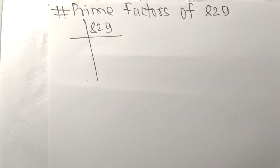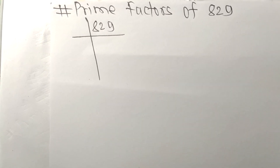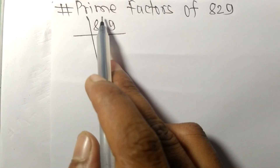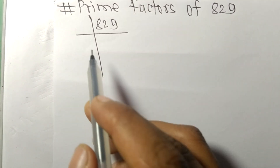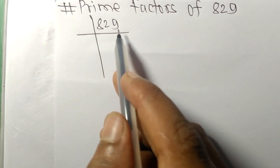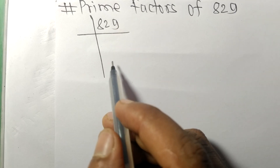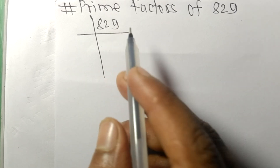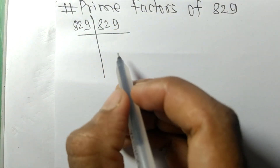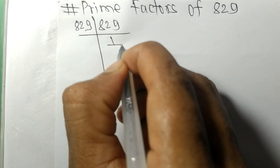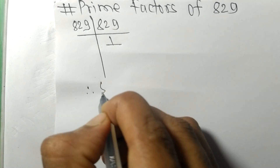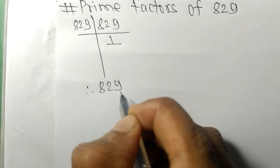Today we shall learn to find the prime factors of 829. Since 829 is a prime number, it is exactly divisible by 829 only, and on dividing we get 1. Therefore 829 equals 829 times 1.